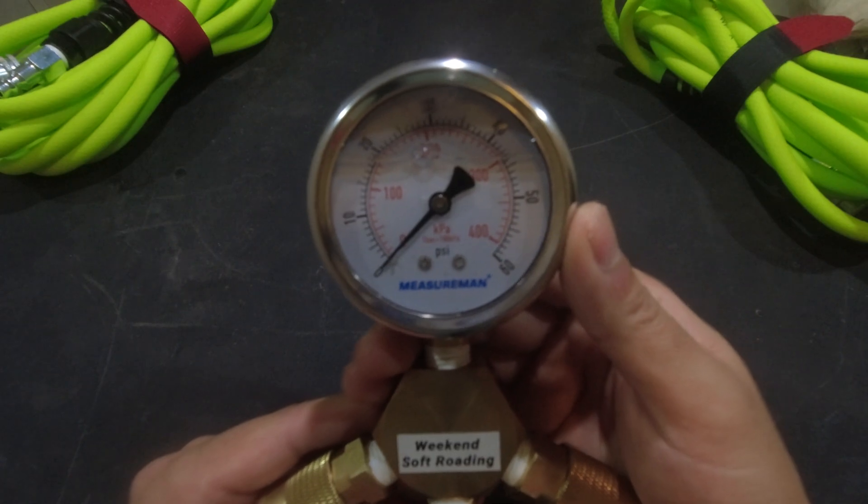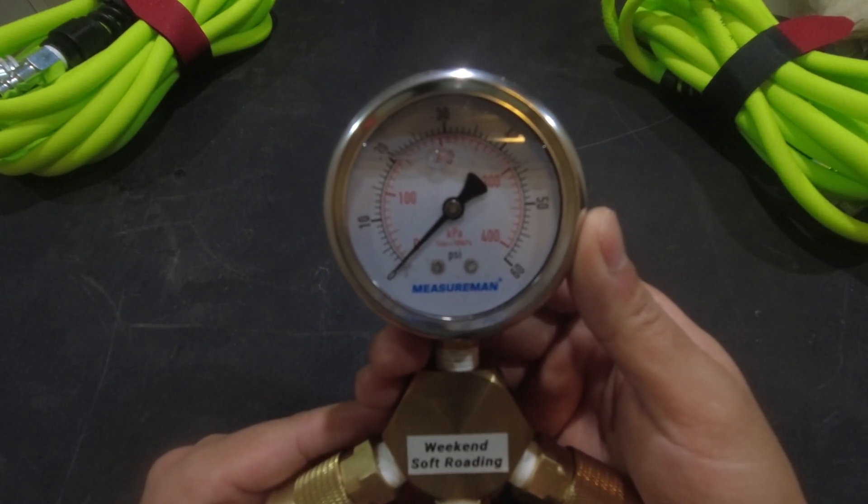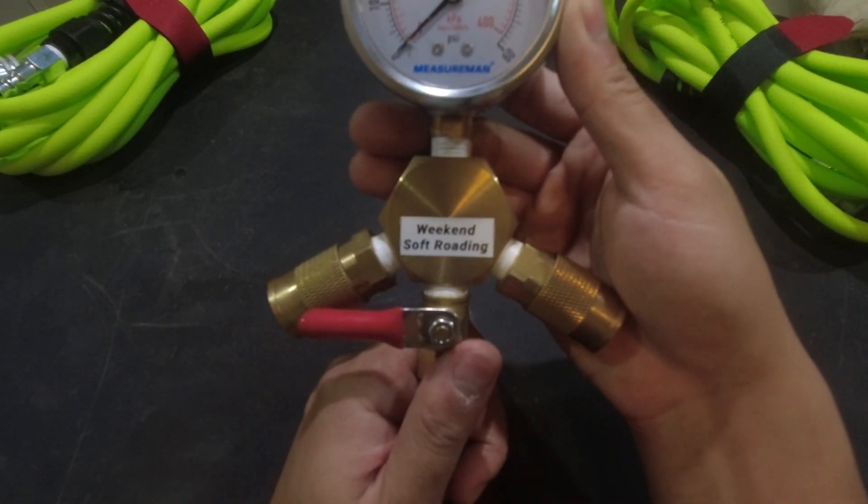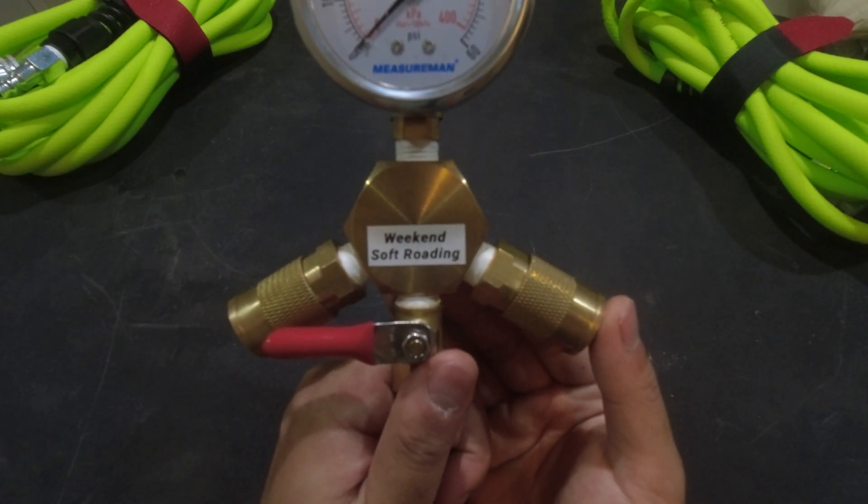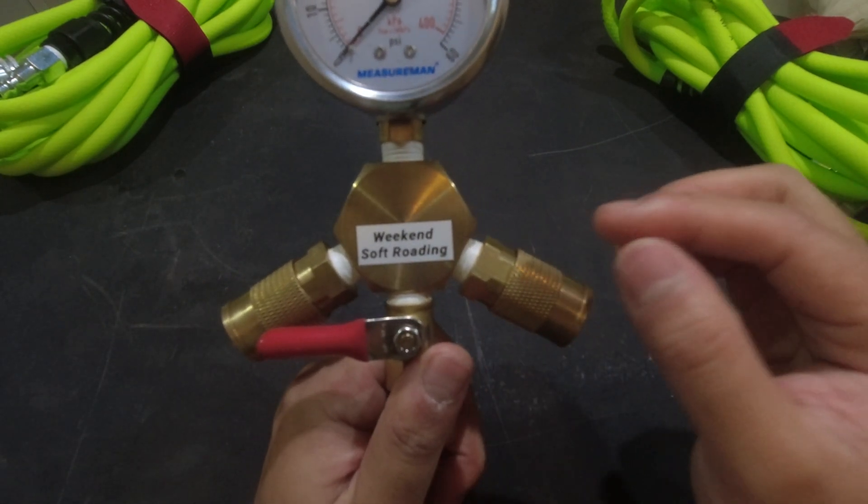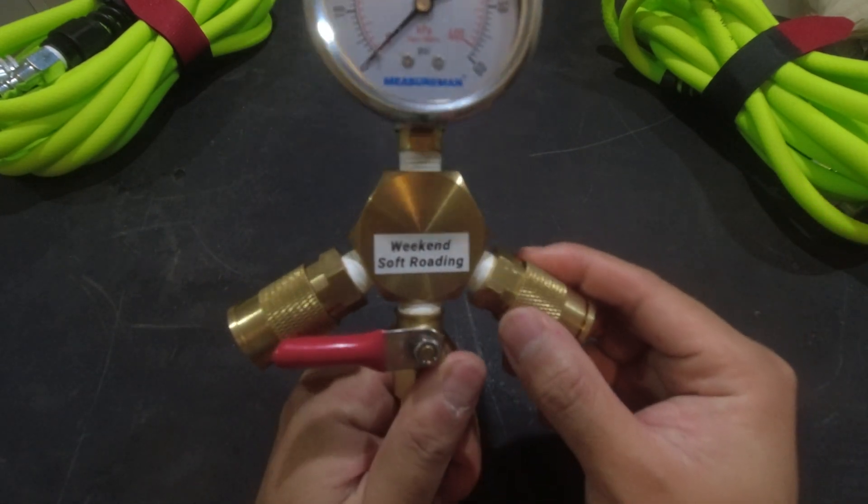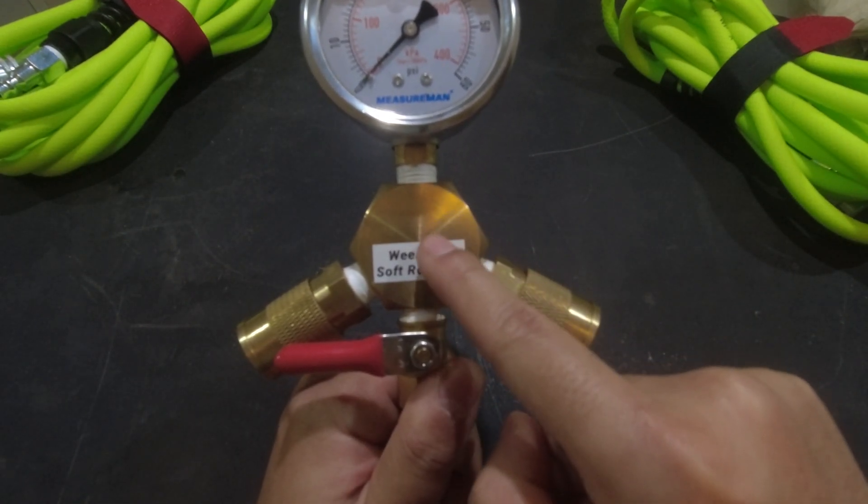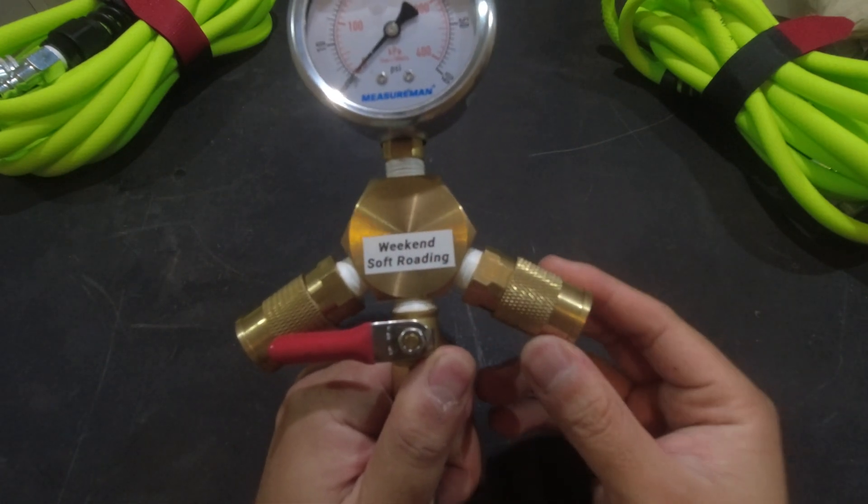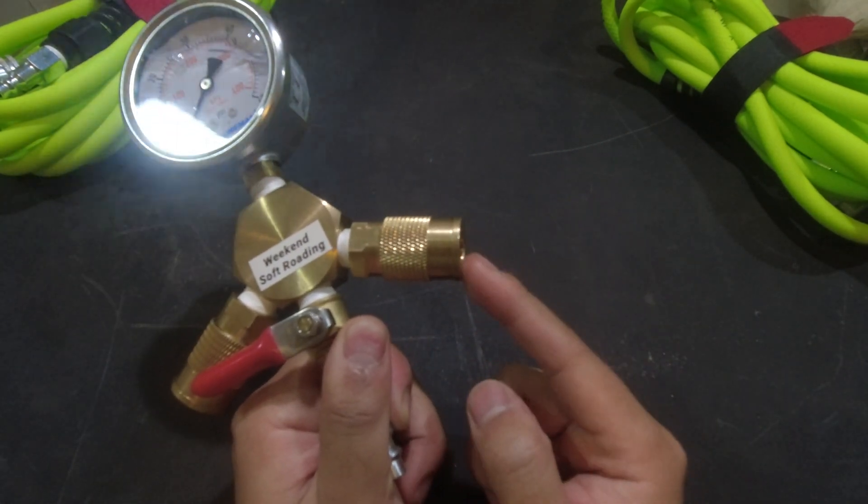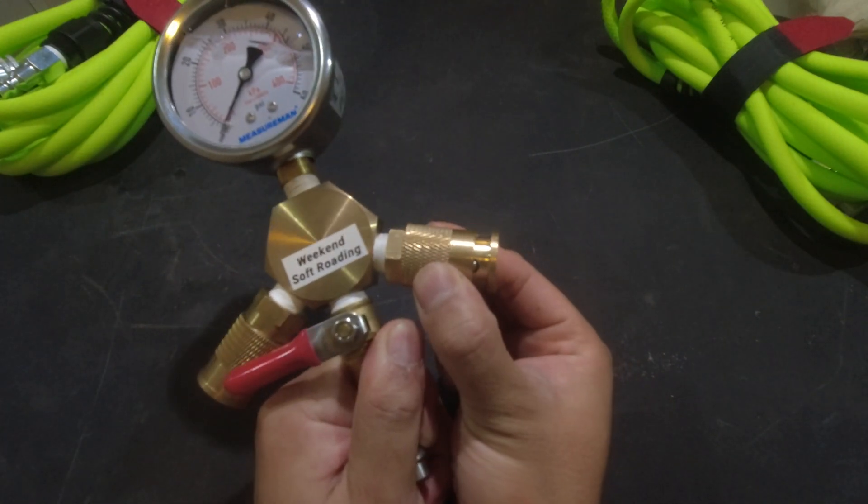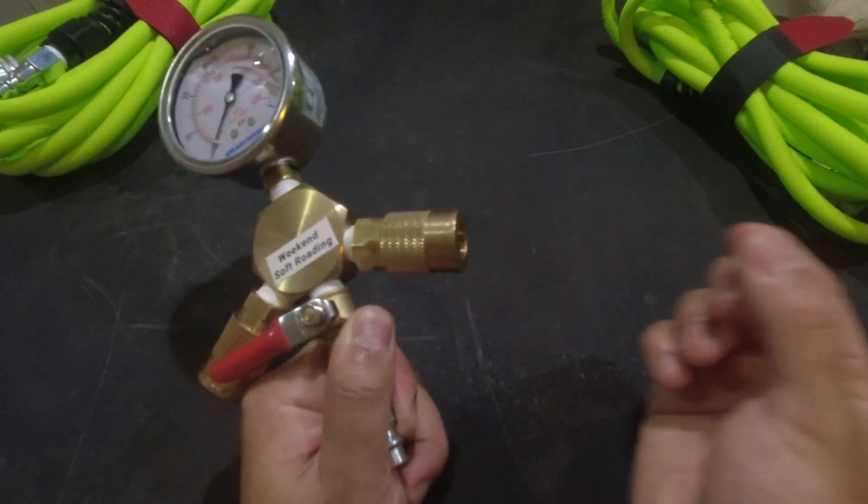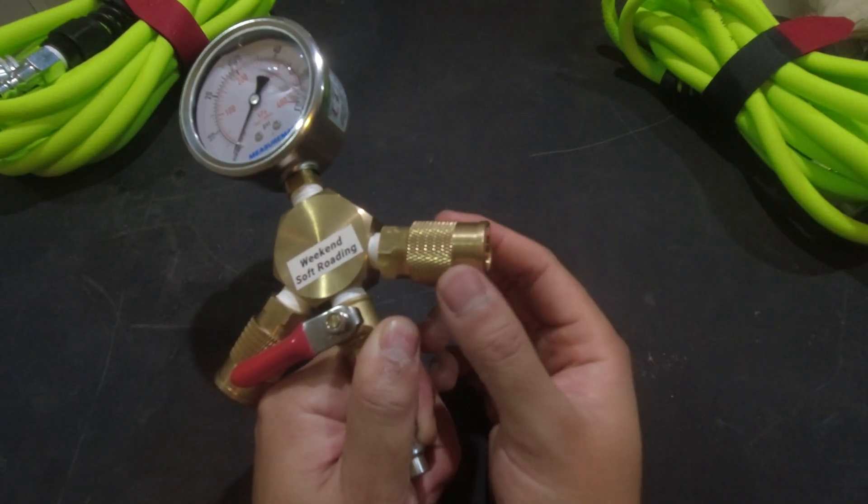Below that is the actual manifold itself, a four-way hexagon manifold with two fittings on each side. This one is a male to female connector into the manifold, and the coupler goes in here. It's just a regular coupler so you pull the collar back and put the coupler from the hose in.